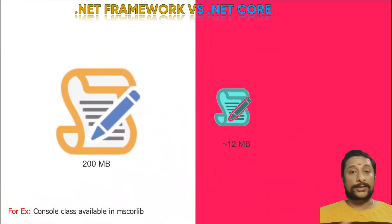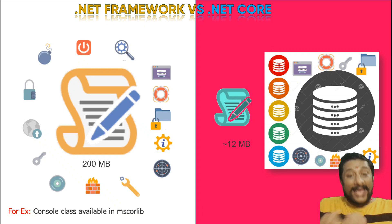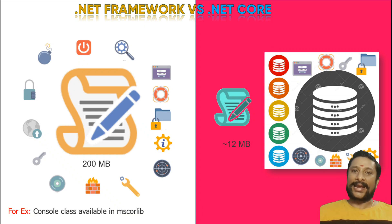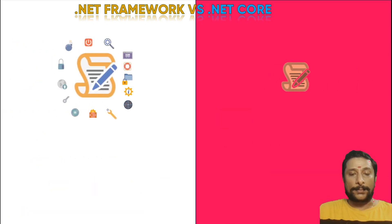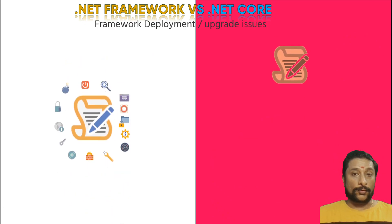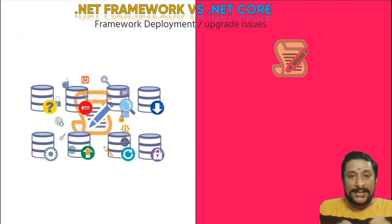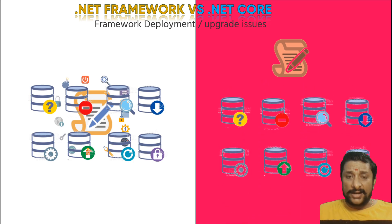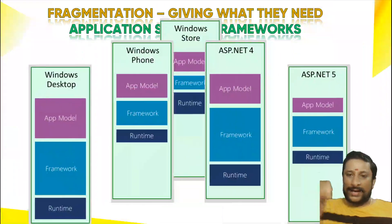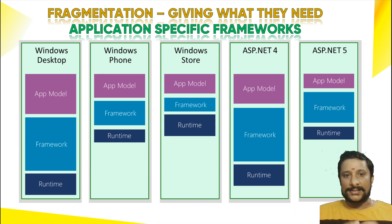.NET Framework is heavy with lots of built-in libraries, whereas .NET Core takes libraries from NuGet packages on demand — so it is very fast because the size is smaller. .NET Framework focuses on only one operating system; .NET Core can focus on multiple. The biggest problem with .NET Framework is that it is highly mixed with the operating system, making upgrades very tough, whereas .NET Core is independent — it is an individual software.